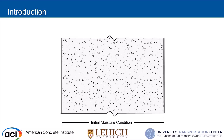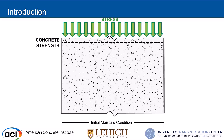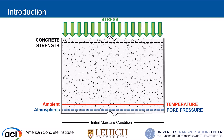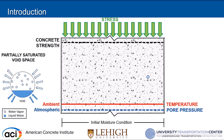Speaking generally: if I have my cross section here, we have an initial moisture condition. Concrete strength is pretty much consistent across the cross section — both tensile and compressive. With a uniformly distributed axial load and temperature at ambient, we have pore pressure at ambient condition. In a permeable void space, we effectively have some liquid water and some water vapor. Concrete is typically two orders of magnitude more permeable for gas than for liquid.